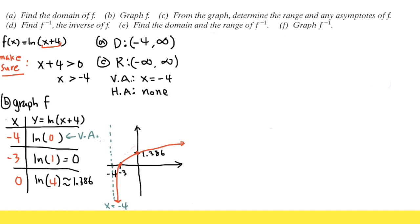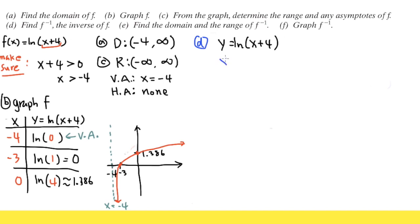Now moving on to the inverse of f. For part D, we are going to write an expression for the inverse. Referring back to the original, f of x is ln of x plus 4. We first write f of x as y, so y equals ln of x plus 4. For the inverse, the key idea is that x and y get switched. So we write x equals ln of y plus 4.